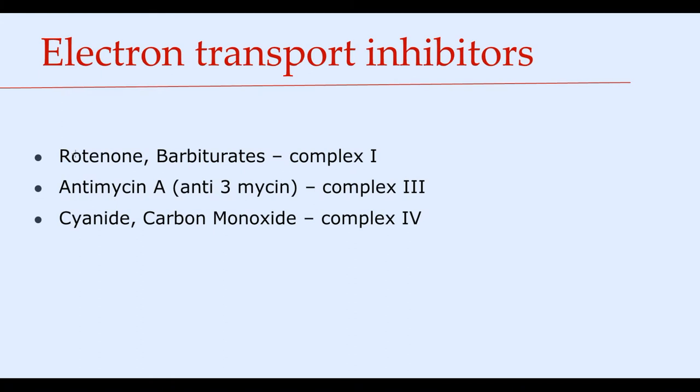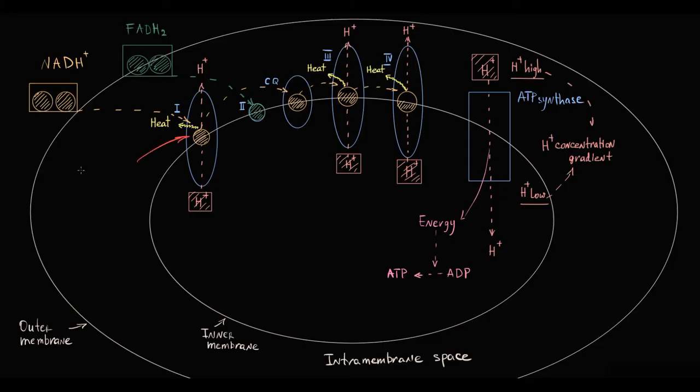The first group is electron transport inhibitors. The first one is rotenone and barbiturates. They inhibit complex I. Complex I is unable to transfer electrons to coenzyme Q.